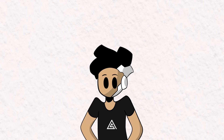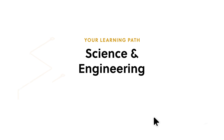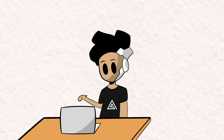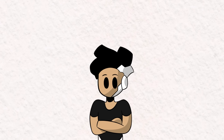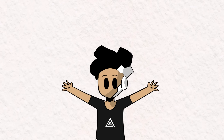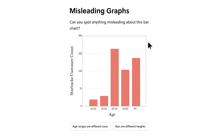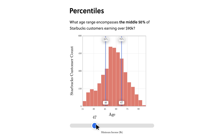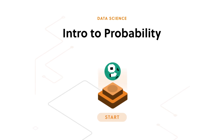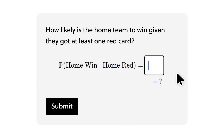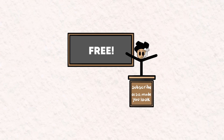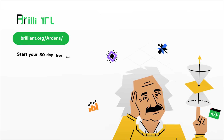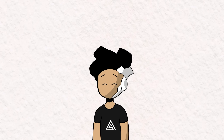If you want to dive deeper into how probability works, check out Brilliant.org, today's sponsor. Brilliant is a learning platform offering engaging courses on math and science, using interactive problem-solving methods proven to be six times more effective than lecture videos. They help you build critical thinking skills and a daily learning habit with lessons completable in just a few minutes. Try everything free for 30 days at Brilliant.org/Ardens and get 20% off an annual premium subscription.